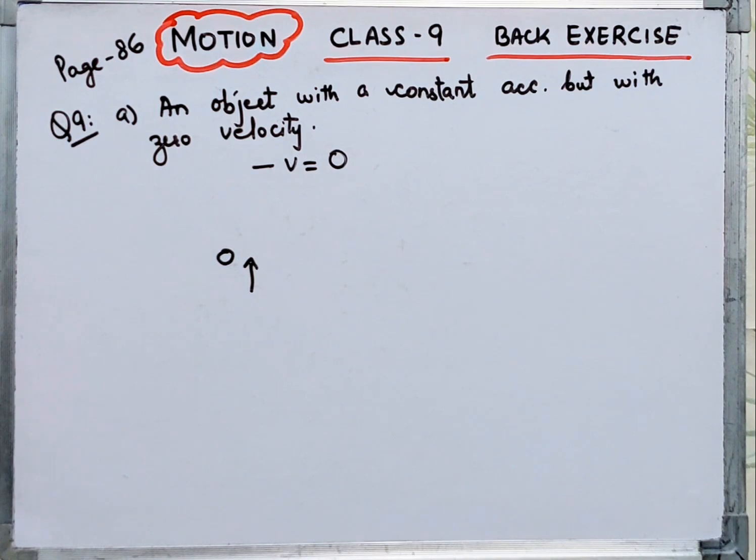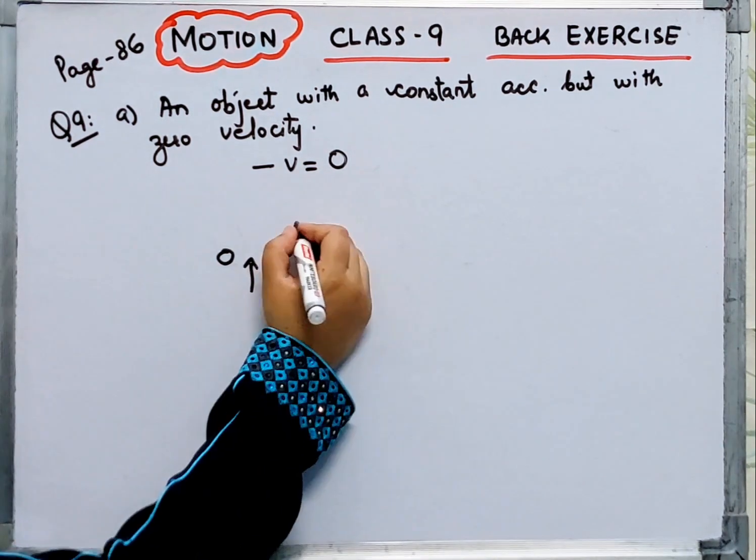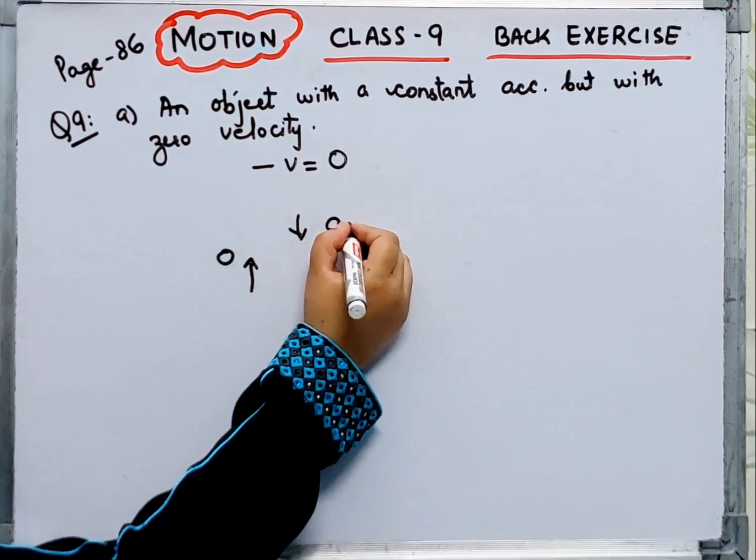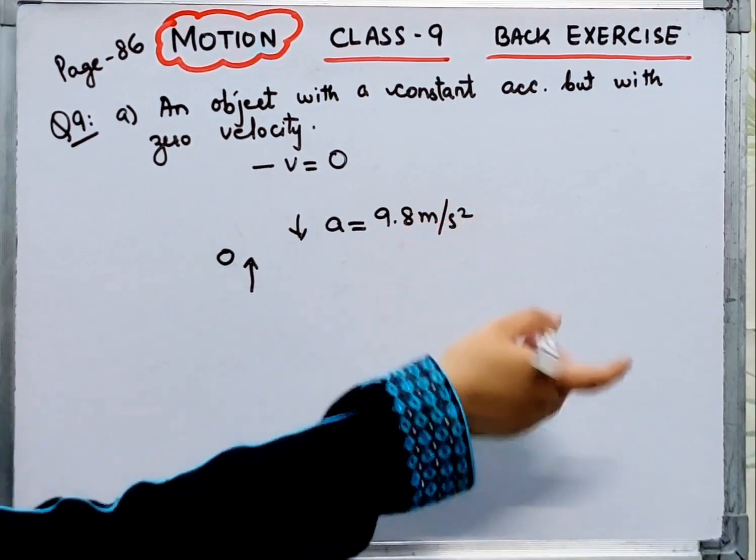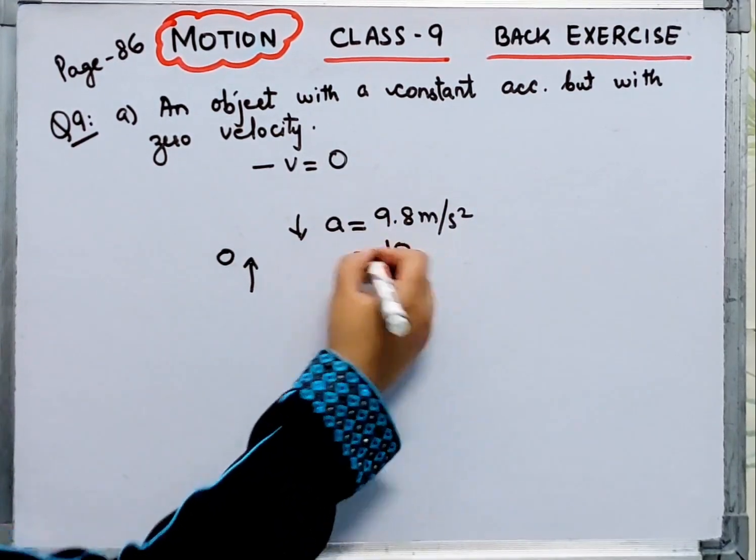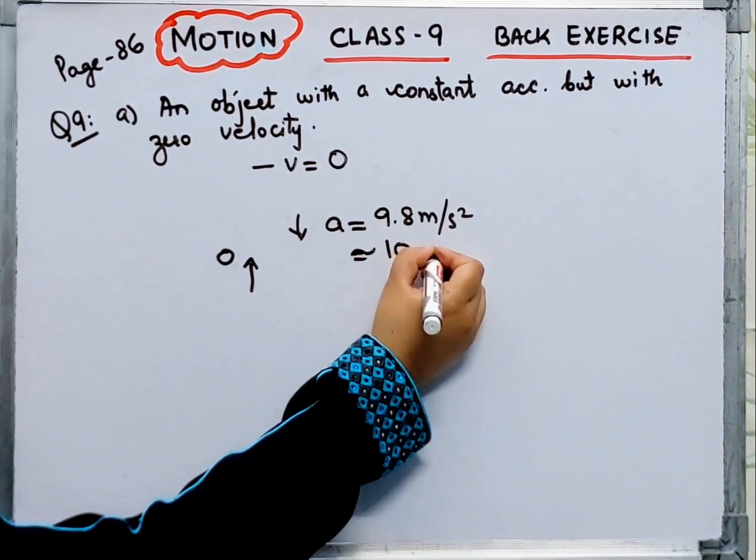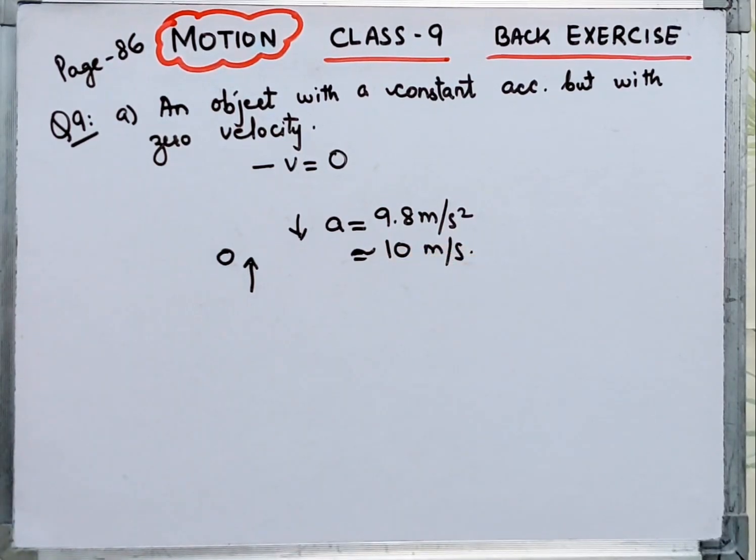We have studied when velocity goes up it becomes zero. Then we are saying constant acceleration. So obviously when you throw something up, the acceleration due to gravity is 9.8 meters per second square. But in some questions we take the rough estimate as 10 meters per second square.